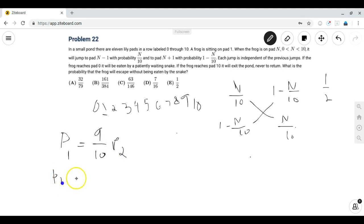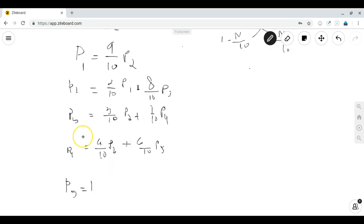Similarly p2 is equal to 2 tenths p of 1 plus 8 tenths p of 3. I've written the equations for p2, p3, p4, and p5. Since we defined p of n as the probability reaching lily pad 5 from point n, we easily see that p of 5 is equal to 1 since you're already at lily pad 5.